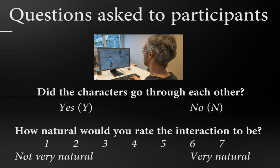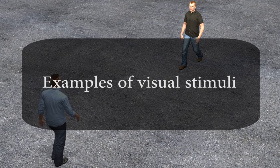These two questions allow us to know when collisions are detected and if the quality of the interaction is natural. Here are some examples of stimuli.